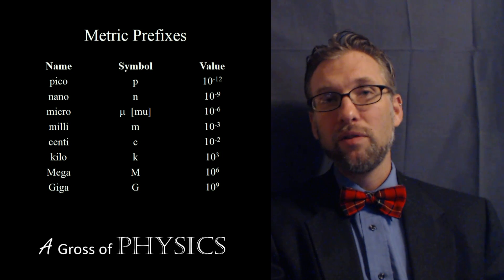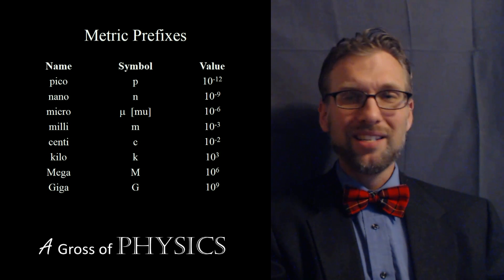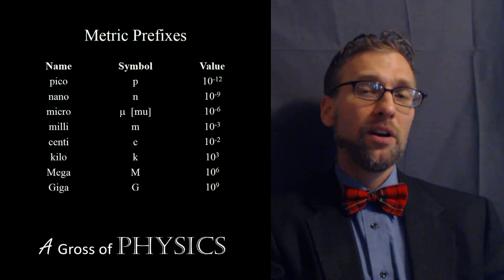We have terra, which is 10 to the 12. And we have femto, which is 10 to the negative 15 as well. But on our chart, we stop at pico all the way to giga.